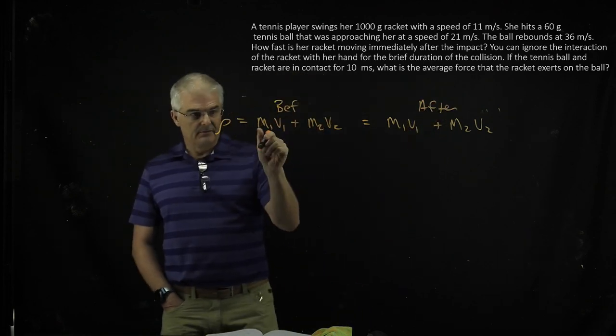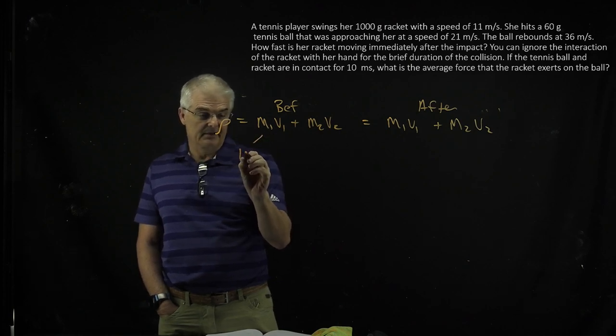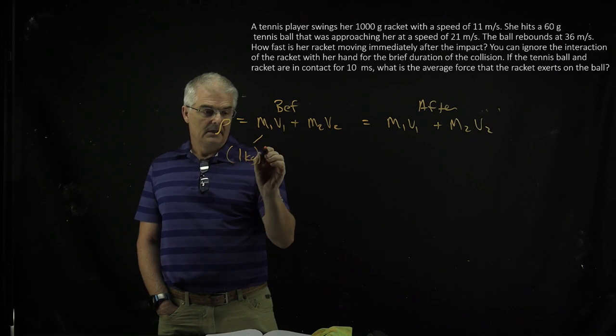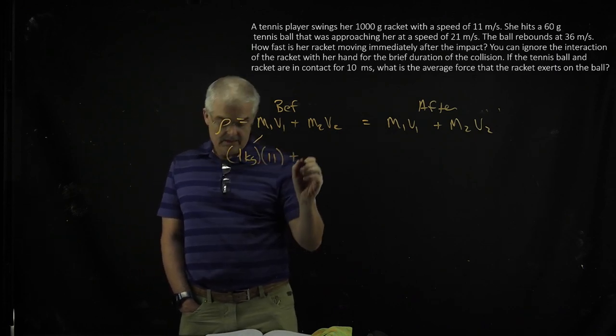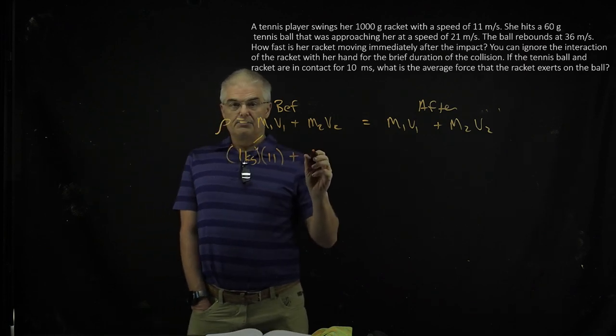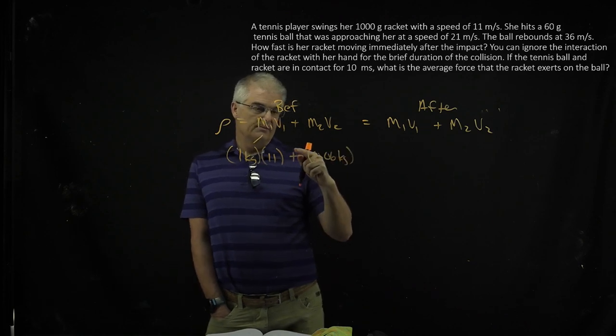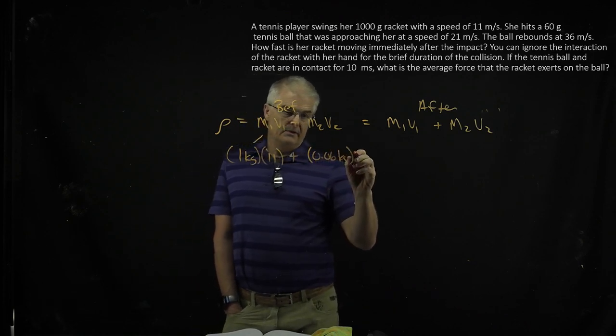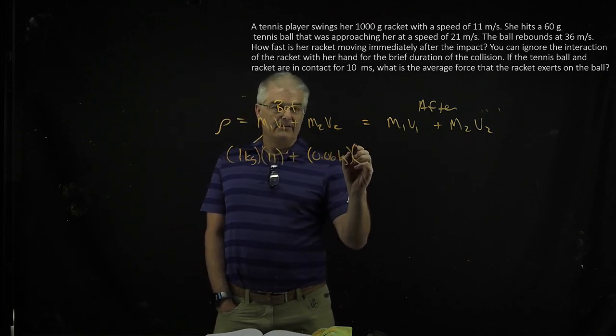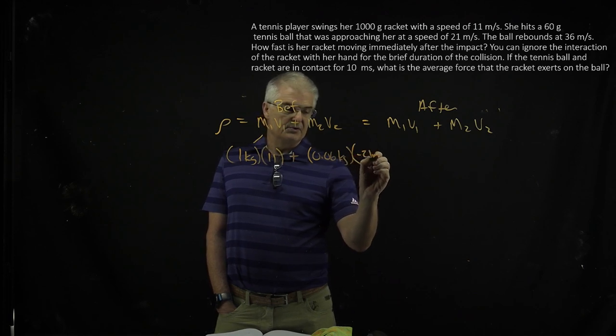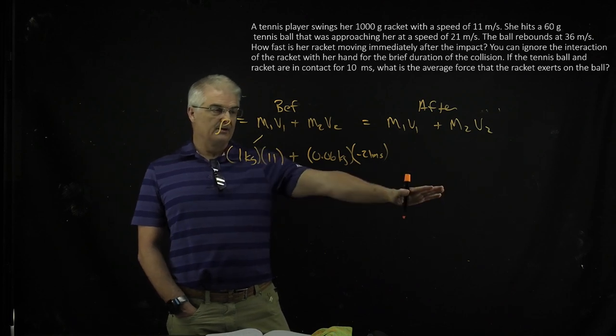So what do I know about the tennis racket? My tennis racket has a mass of 1 kilogram. It says 1,000 grams, but I'm going to put it in kilograms. And it's moving at a speed of 11 meters per second. The ball is 0.06 kilograms, that's 60 grams, times the velocity. Now watch this, it's moving at negative 21 meters per second. It's approaching in the opposite direction. So I know everything on the left, right?